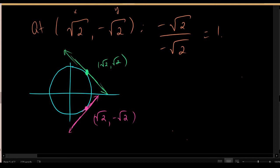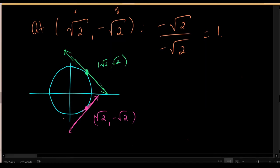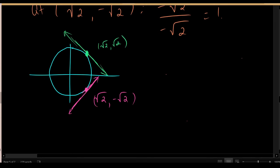Implicit differentiation is used when you have an implicit relationship between x and y and it is very difficult or impossible to isolate y on one side of the equation. Implicit differentiation says: don't bother to isolate y — just take the derivative of the equation exactly as it's presented. Be careful when taking the derivative of terms that contain y, because you will usually need the chain rule.